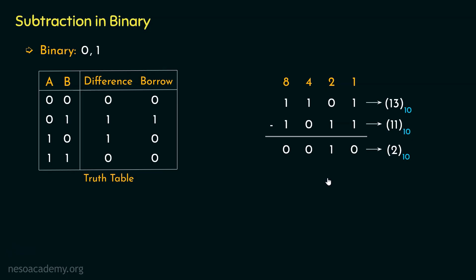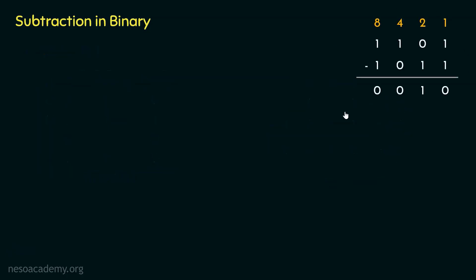This is how we perform subtraction in binary using the pen and paper method. However, this is not how machines actually perform subtraction. For machines, performing subtraction and addition in different ways is cost-ineffective, because it requires implementing a separate adder circuit and a separate subtractor circuit.